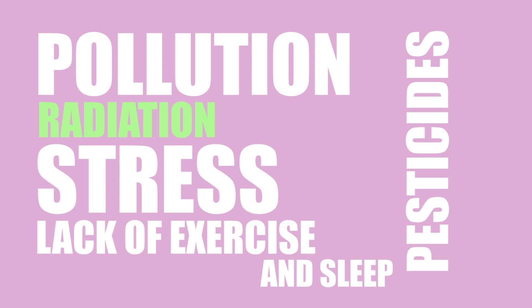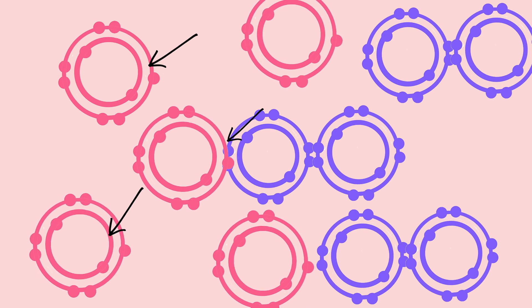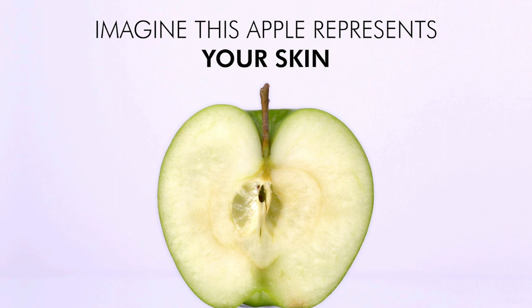These free radicals start attacking healthy cells to replace their missing electron. Once these cells lose their electron, they split and become free radicals, and so it causes a chain reaction known as oxidative stress.